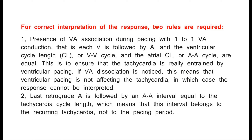AV response practically excludes atrial tachycardia, and the diagnosis is either AVNRT or orthodromic AVRT. For correct interpretation, two rules are required: One, presence of VA association during pacing with 1-to-1 VA conduction, meaning each V is followed by A, and the ventricular CL (V-V cycle) and atrial CL (AA cycle) are equal — to ensure the tachycardia is really entrained. Two, the last retrograde A is followed by an AA interval equal to the tachycardia cycle length, confirming this interval belongs to the recurring tachycardia, not the pacing period.